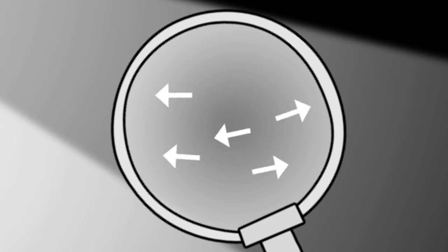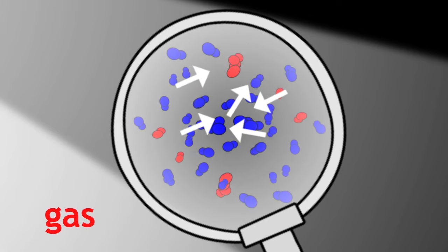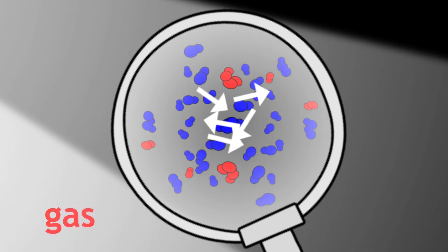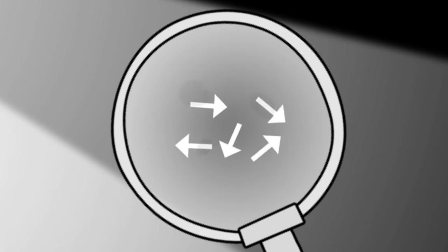The dust particles are very small and are supported by a fluid. In this case, that fluid is a gas. You are unable to see the gas particles directly because they are too small, but you can see the larger dust particles.